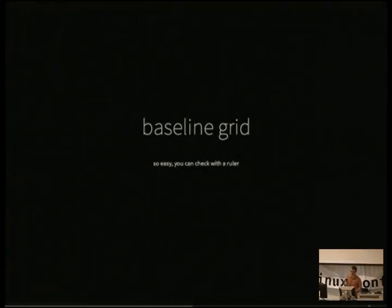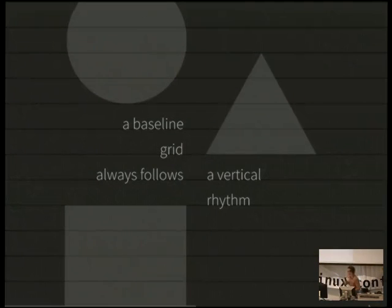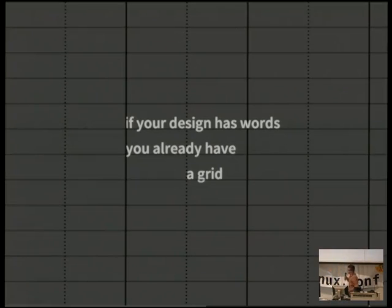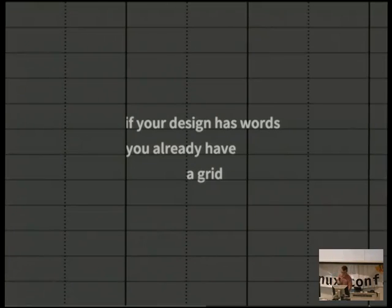One of the rules is a baseline grid — you've probably heard that in CSS preprocessors. You can check stuff with a ruler, that's how easy it is. The baseline always follows a vertical rhythm. If you put anything on a canvas, if your design has words and multiple lines, you already have a grid — you can see how much from the left it is, how far down your lines go. You've created the base structure. It's an invisible thing, but the rule is applied the second you put anything on a canvas.